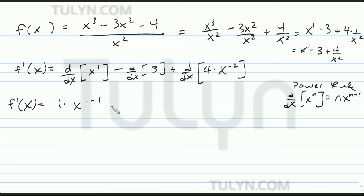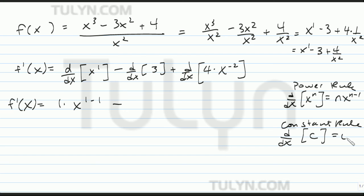So it's going to be 1 times x to the 1 minus 1, minus the derivative of the constant. The derivative with respect to x of a constant c is going to be 0. It's going to be 0, plus 4 times the derivative of x to the n power.